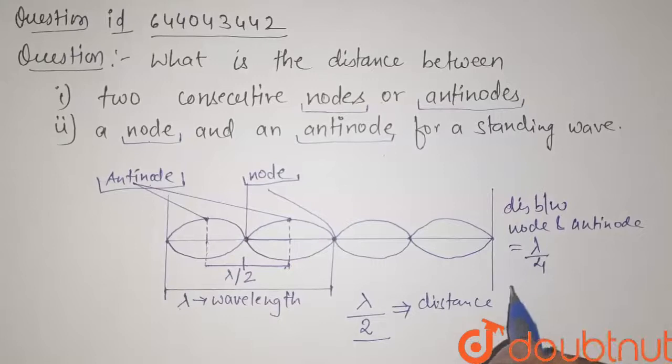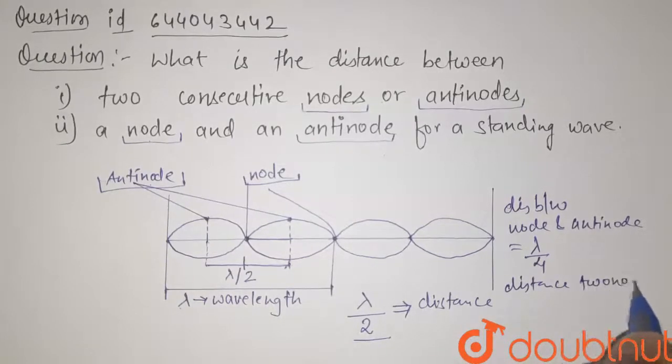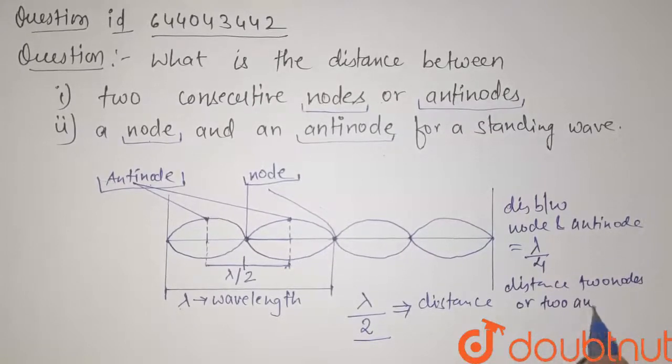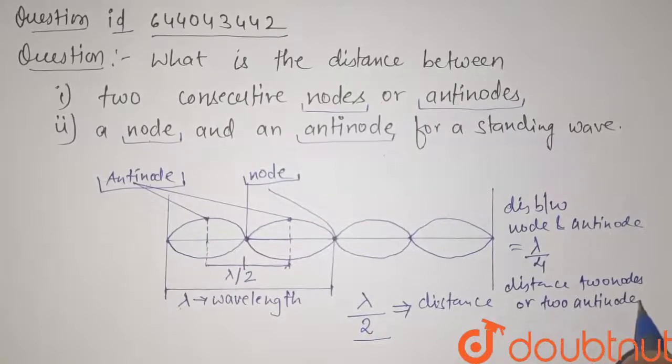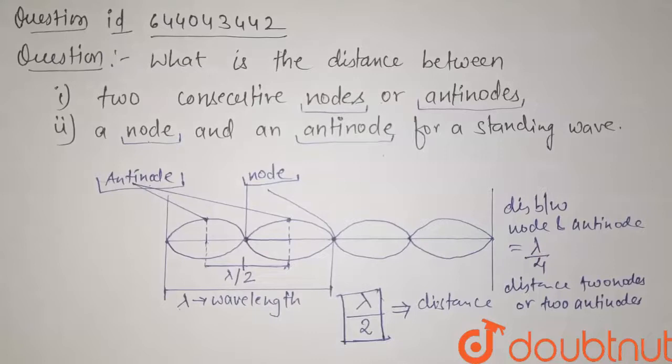The distance between two nodes or two antinodes is equal to lambda by 2. So this is our answer for this question. Thank you.